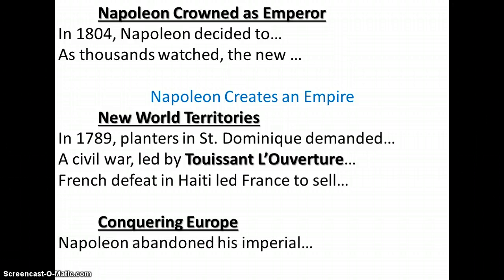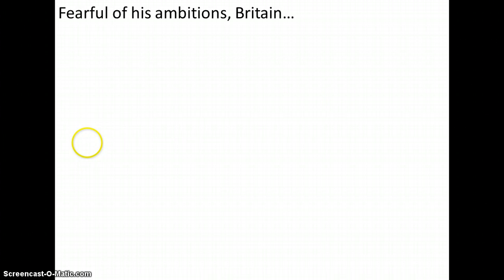Conquering Europe. Napoleon, as a result, had to abandon his imperial ambitions in the New World because Haiti was lost and he sold Louisiana, and he turned his attention to Europe. He controlled the Netherlands and parts of Italy.